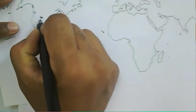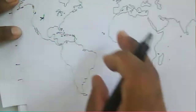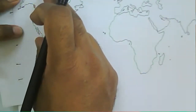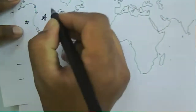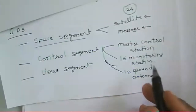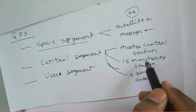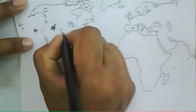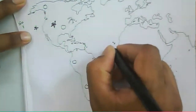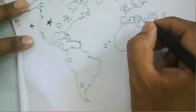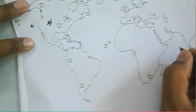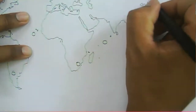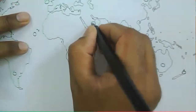On the world map, the master control station is located here, and there is also an alternate master control station. These are the two master control stations. Along with that, there are 16 monitoring stations distributed across various continents throughout the world, and ground antennas are present at multiple locations on the map.